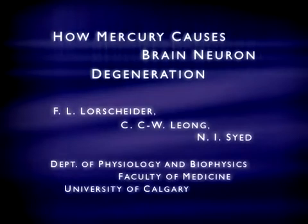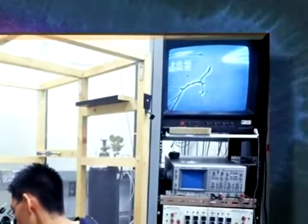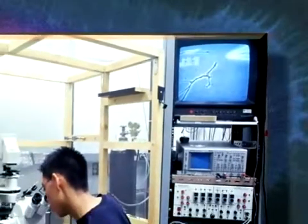How Mercury Causes Brain Neuron Degeneration. Mercury has long been known to be a potent neurotoxic substance, whether it is inhaled or consumed in the diet as a food contaminant.